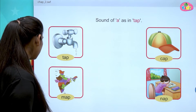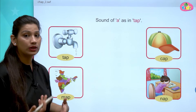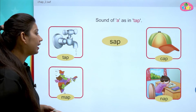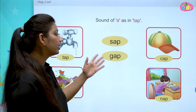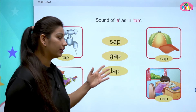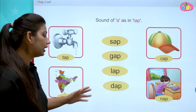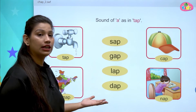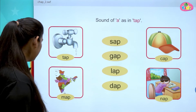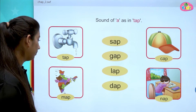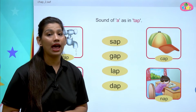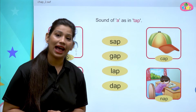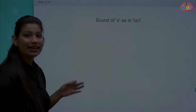Let us understand more words with the AP sound like S, A, P — Sap. G, A, P — Gap. L, A, P — Lap. D, A, P — Dap. All of the words are with AP sound.